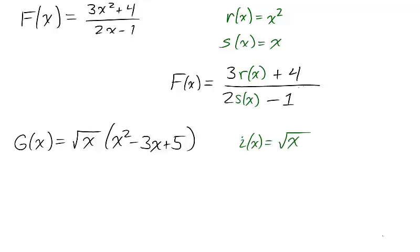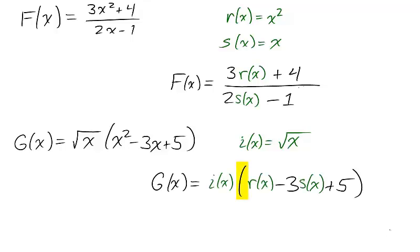One possible decomposition for g is into the pieces r, s, and i, where we can use the product, sum and difference, and constant multiple combinations to construct g from r, s, and i.